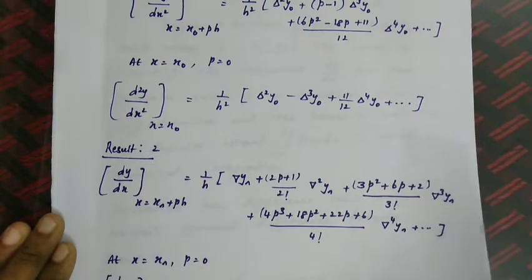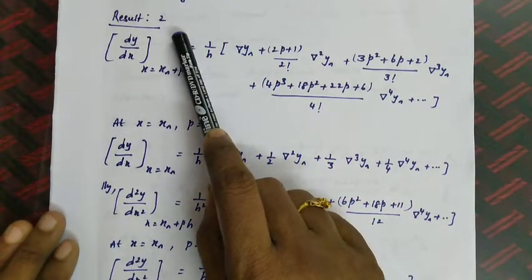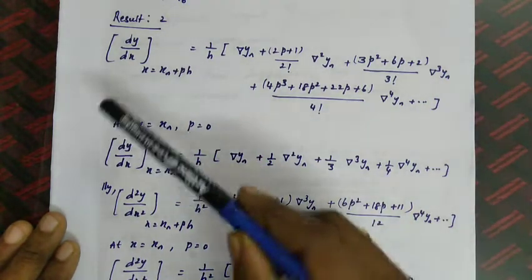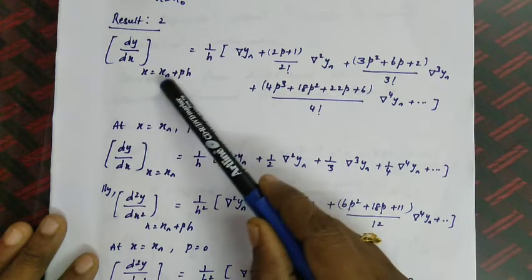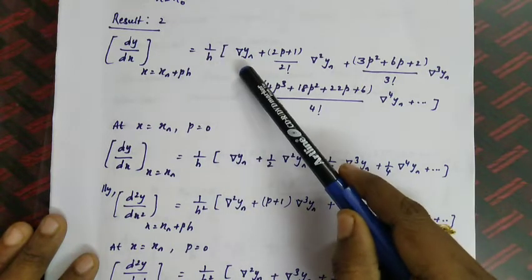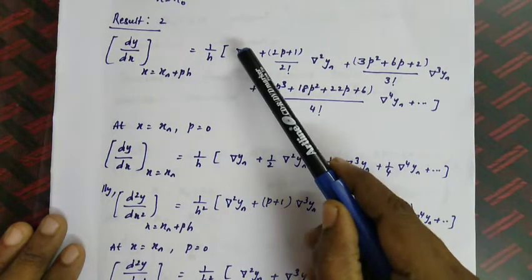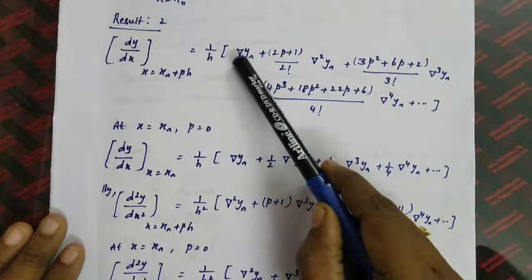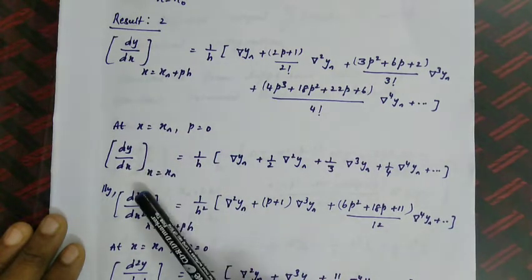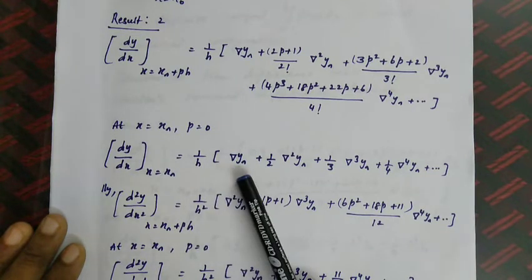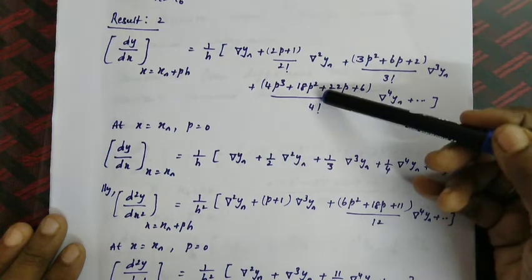Result 2 is based on the backward difference formula. Using the backward difference table, dy/dx at x = xₙ + ph is: (1/h)[∇yₙ + (2p+1)/2! · ∇²yₙ + ...]. At x = xₙ where p = 0, the result simplifies to: (1/h)[∇yₙ + (1/2)∇²yₙ + (1/3)∇³yₙ + ...].